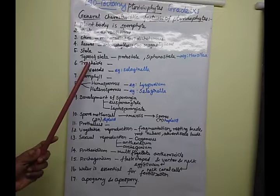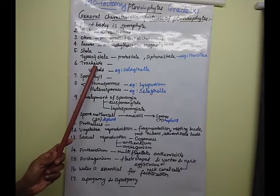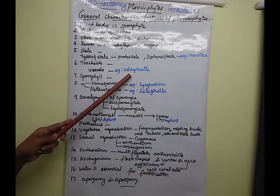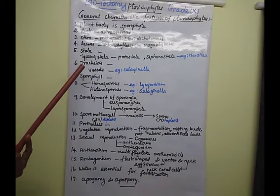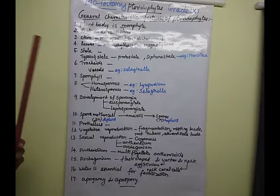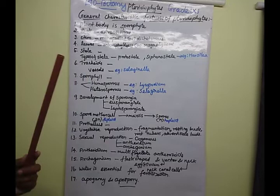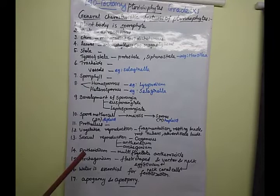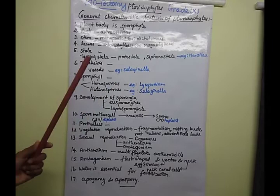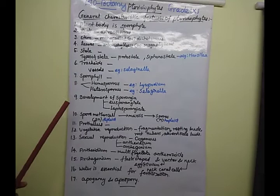The next feature is tracheids. In Pteridophytes, mostly the water-conducting element is tracheids. But in one example, Selaginella, the water-conducting elements are vessels. Tracheids and vessels are sub-types of xylem elements. Tracheids is the major water-conducting element, but in the Selaginella species, water-conducting elements are found in vessel cells.